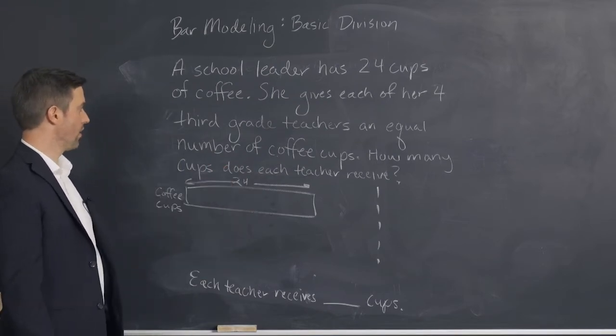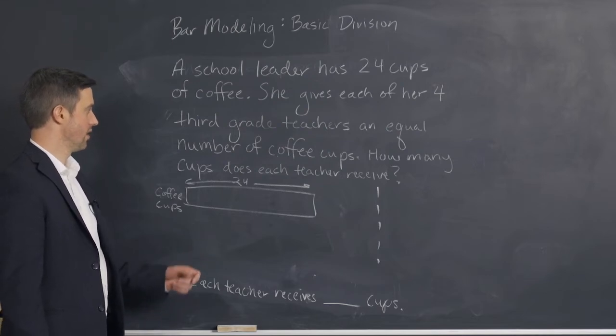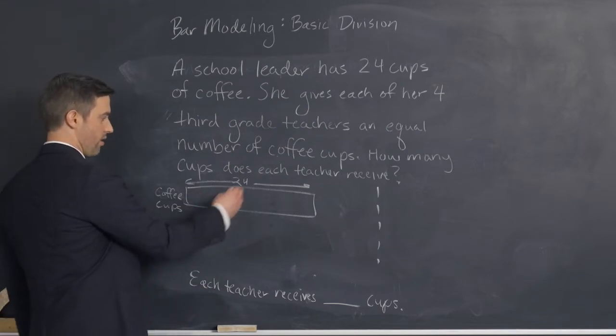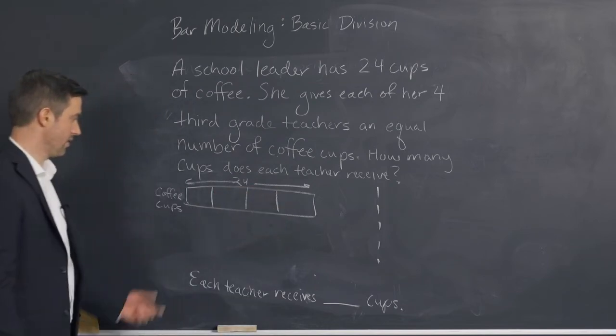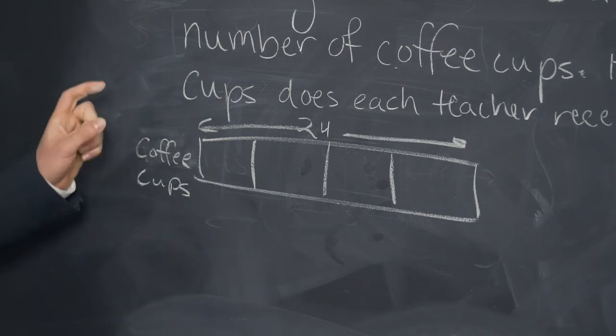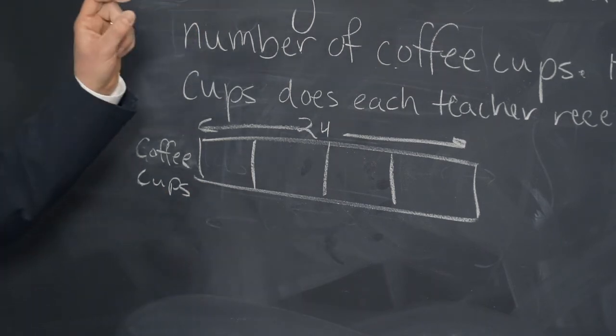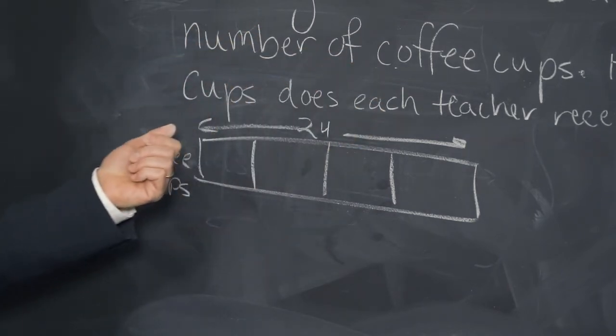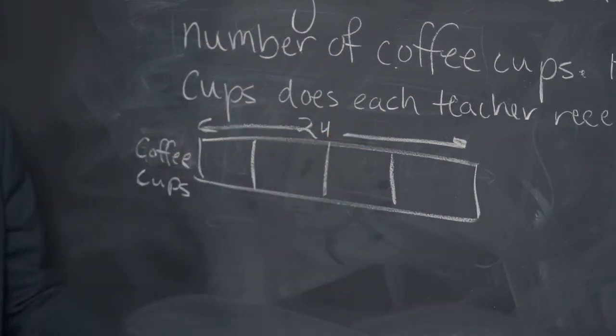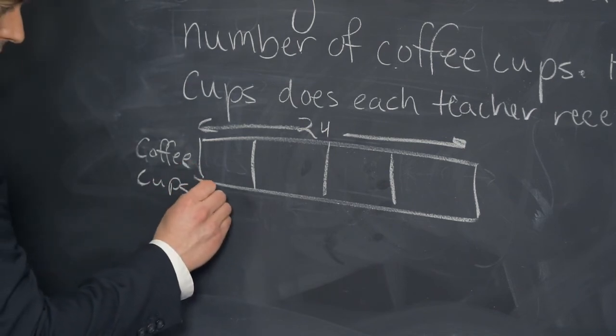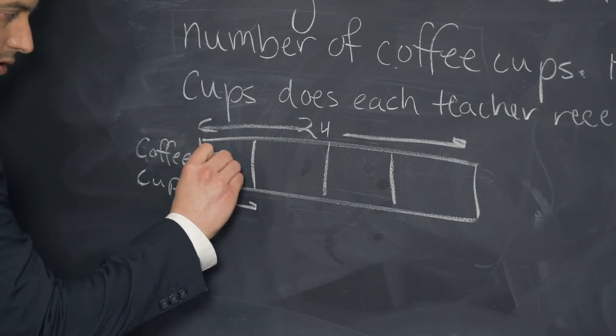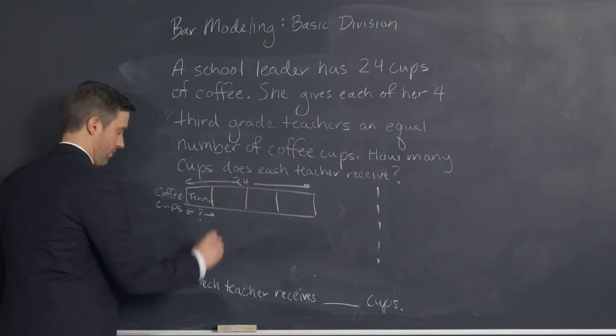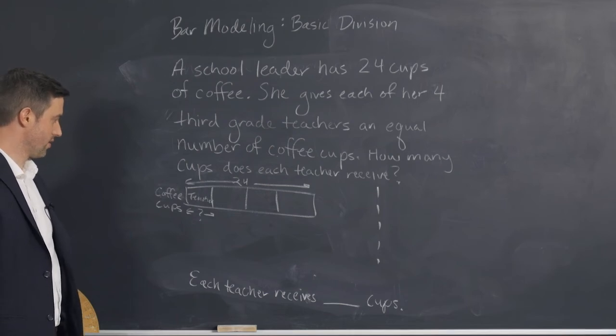She gives each of her four third grade teachers an equal number. So we're going to have four separate boxes that are equally sized. She gives each of her four third grade teachers an equal number of cups of coffee. This would be my teacher. Okay. Our bar model is complete.